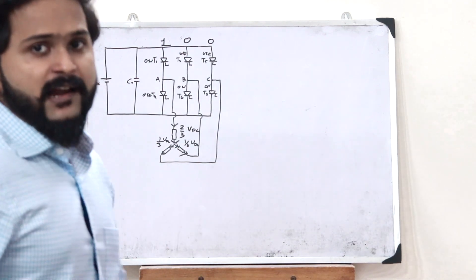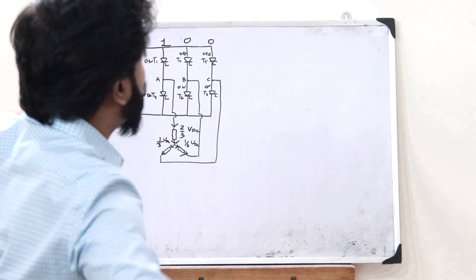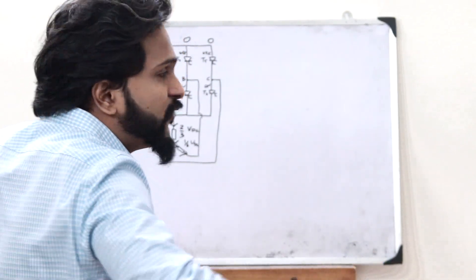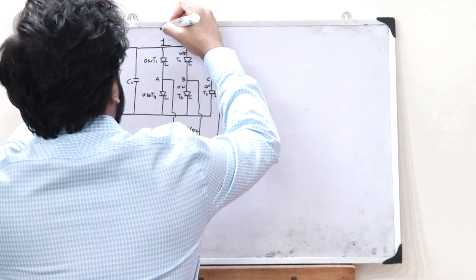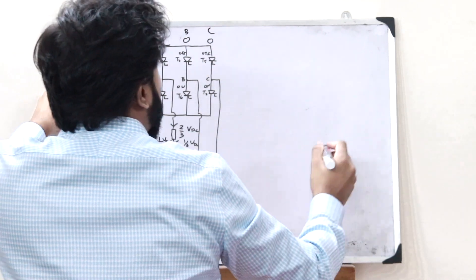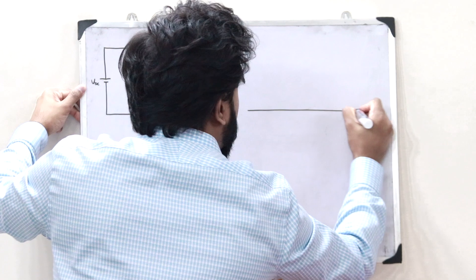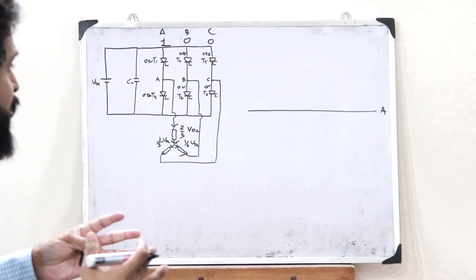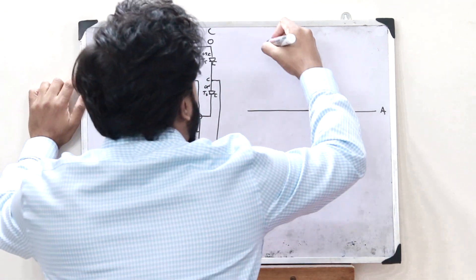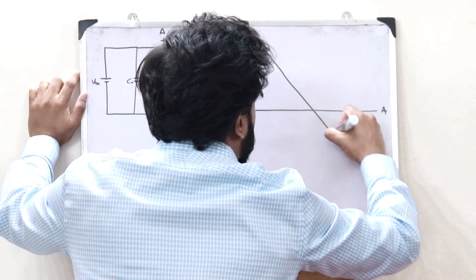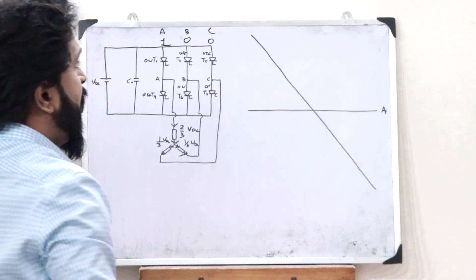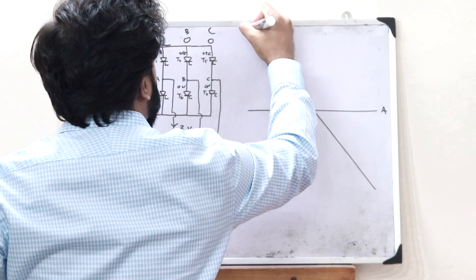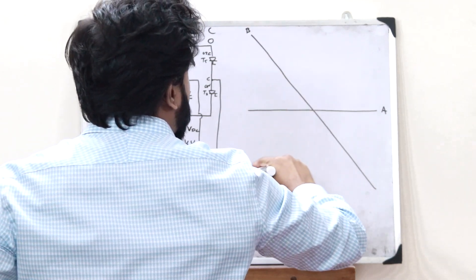Let us draw the voltage plane and represent these space vectors. Each of these phases are at a phase difference of 120 degrees. Let us draw phase A, and these phases be A, B, and C. If this is phase A, then phase B will be at a phase difference of 120 degrees, and phase C will be at a phase difference of 120 degrees with phase B.